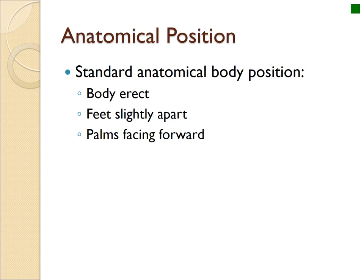Now we'll look at body orientation — where organ systems are located and how the body is organized as a map. We look at the anatomical position and then how we divide the body into regions, planes, and depth. The anatomical position is looking at a person face-on: body upright and erect, feet slightly apart, palms facing forward with arms at the sides. This is the standard position used to determine up and down, left and right, and deep and superficial on the body.